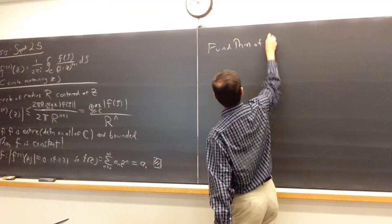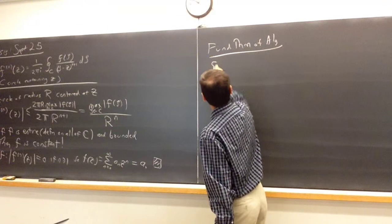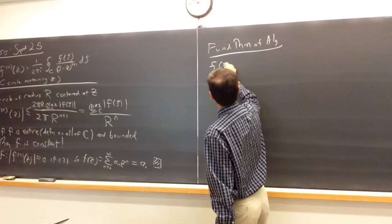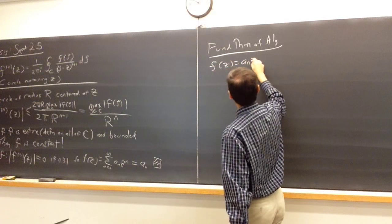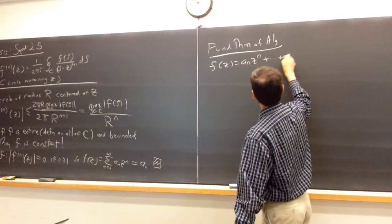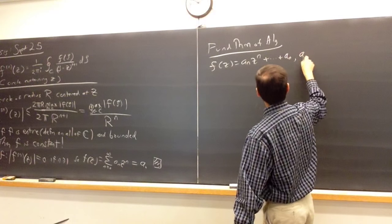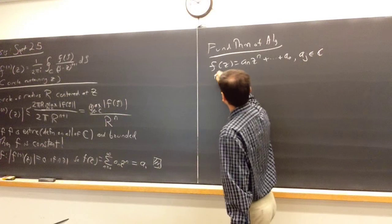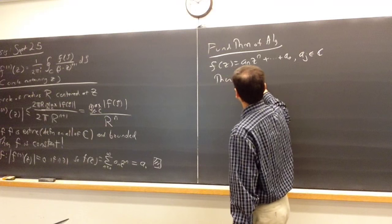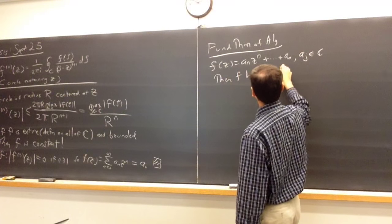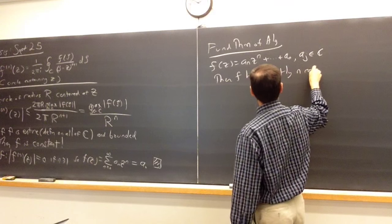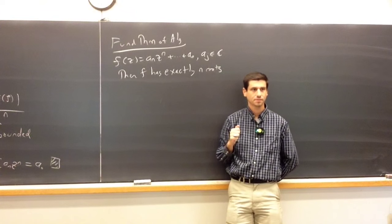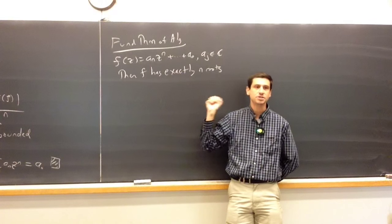Let's do the fundamental theorem of algebra. Say f of z equals a_n z to the n plus ... plus a_0, where each a_j is in ℂ. Then f has exactly n roots — and of course we allow the roots to have multiplicity.